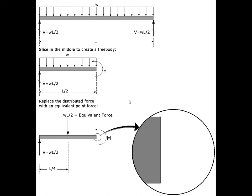That doesn't tell us anything about internal forces, but we can do the following. We can create something called a free body. In this case I've taken half of this beam, drawn a picture of it, and drawn all the forces on it. There's a distributed load over this length, which is L over 2 since the overall length is L, and we continue to have this reaction at the left end.